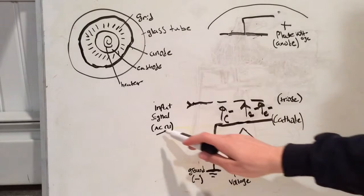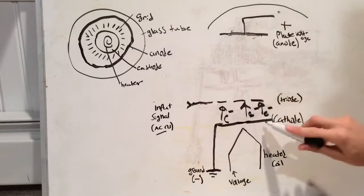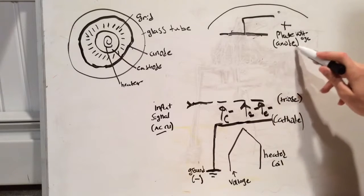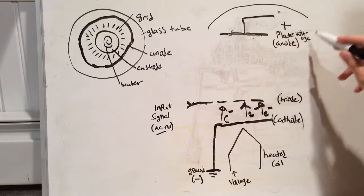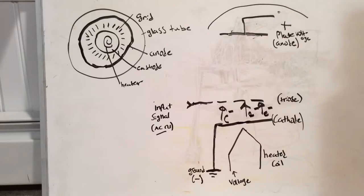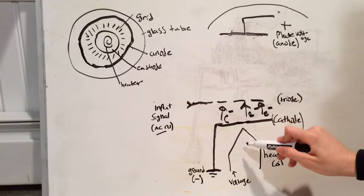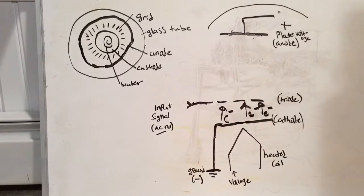Now the whole point is to turn the AC signal to DC current. It's going to be direct because it's going to the anode, which is always going to be positive because you're giving it a voltage. So the electrons will always be in a direct current towards the anode and out the tube.